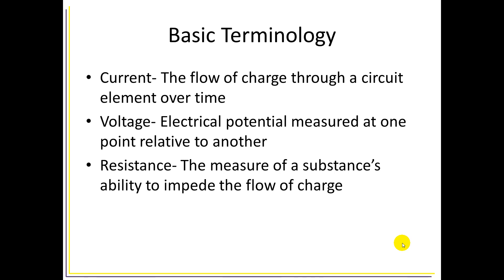Some basic terminology: current and voltage are unfortunately used somewhat interchangeably by people who don't know a lot about basic electricity and circuit analysis, but they are very different concepts. Current is the flow of charge through a circuit over time, whereas voltage is the electrical potential measured at one point relative to another in a circuit. Resistance, as we've already talked about, is the measure of a substance's ability to impede the flow of charge.